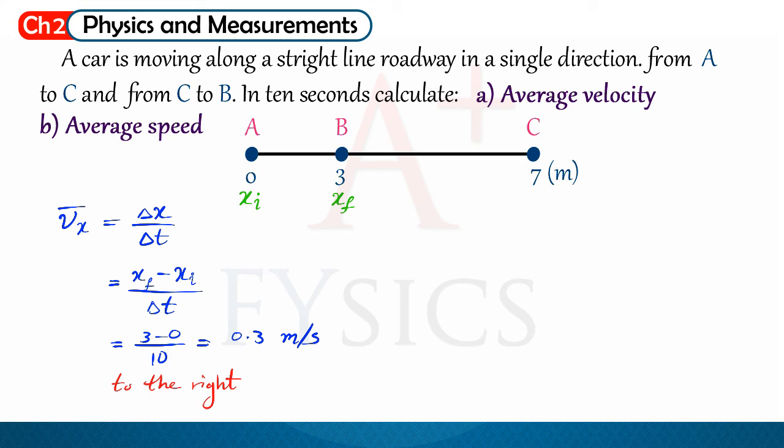The second part, average speed. Well, average speed is equal to distance divided by time. The total distance traveled by the car is the distance between A and B and the distance between B and C and the distance between C and B again. So, that's 3 plus 4 plus 4 divided by 10. And the answer is 1.1 meters per second. We notice that there isn't a direction because as we said earlier, average speed is a scalar quantity.